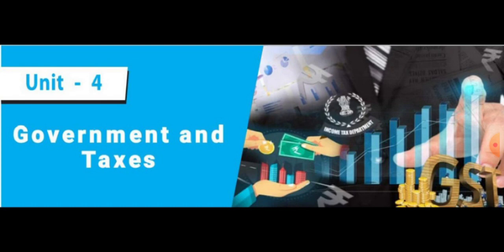Progressive tax means as income increases, the tax also increases. For example: 10,000 income means 10% tax; 20,000 income means 15% tax; 30,000 income means 25% tax to pay the government.